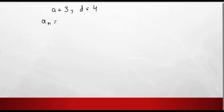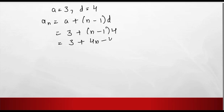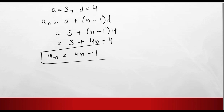Now we have to find the nth term. aₙ equals a plus (n minus 1) into d. Putting in the values — a equals 3, d equals 4 — we get: 3 plus (n minus 1) into 4, which is 3 plus 4n minus 4. Therefore, aₙ equals 4n minus 1. This is the final answer.